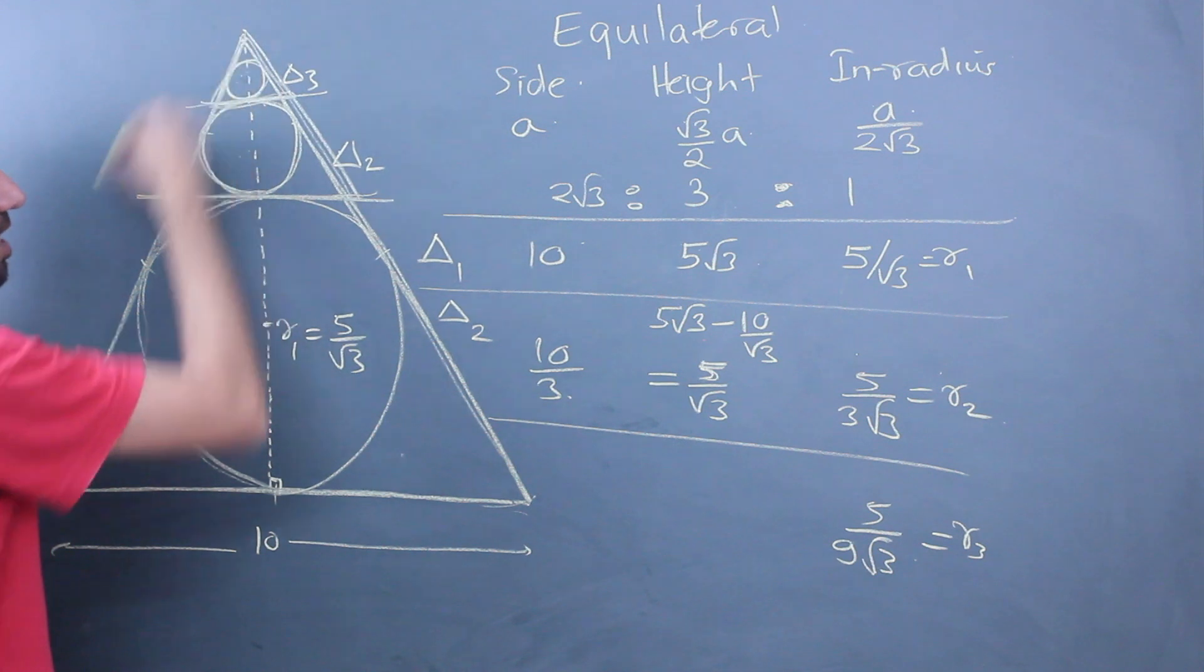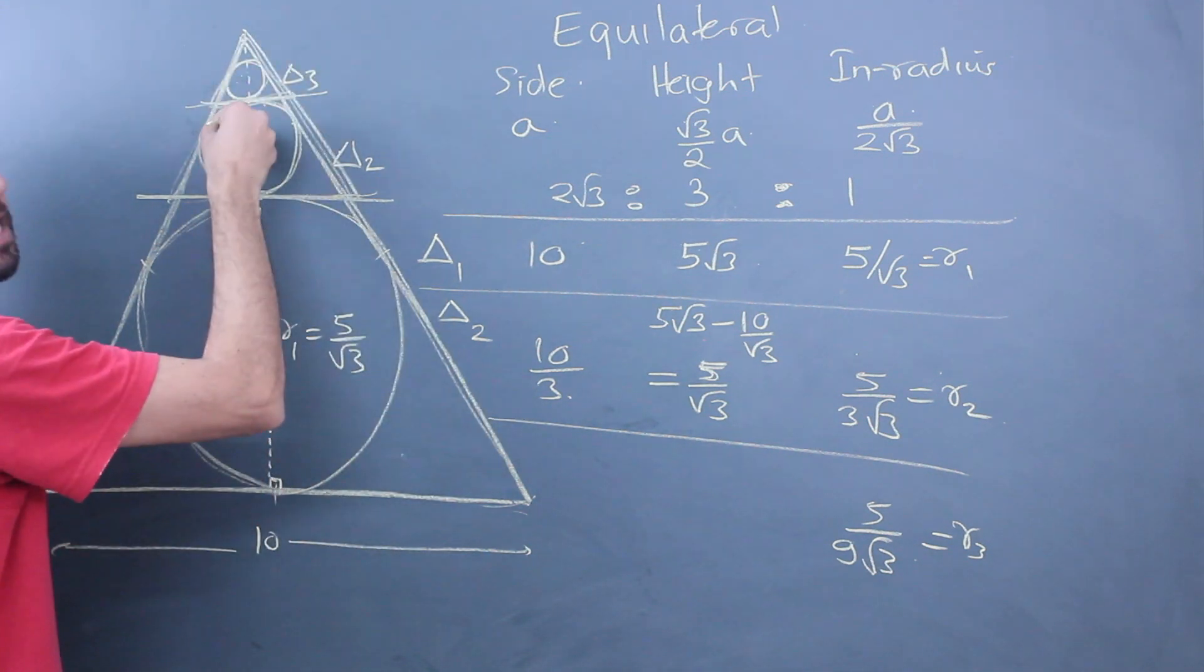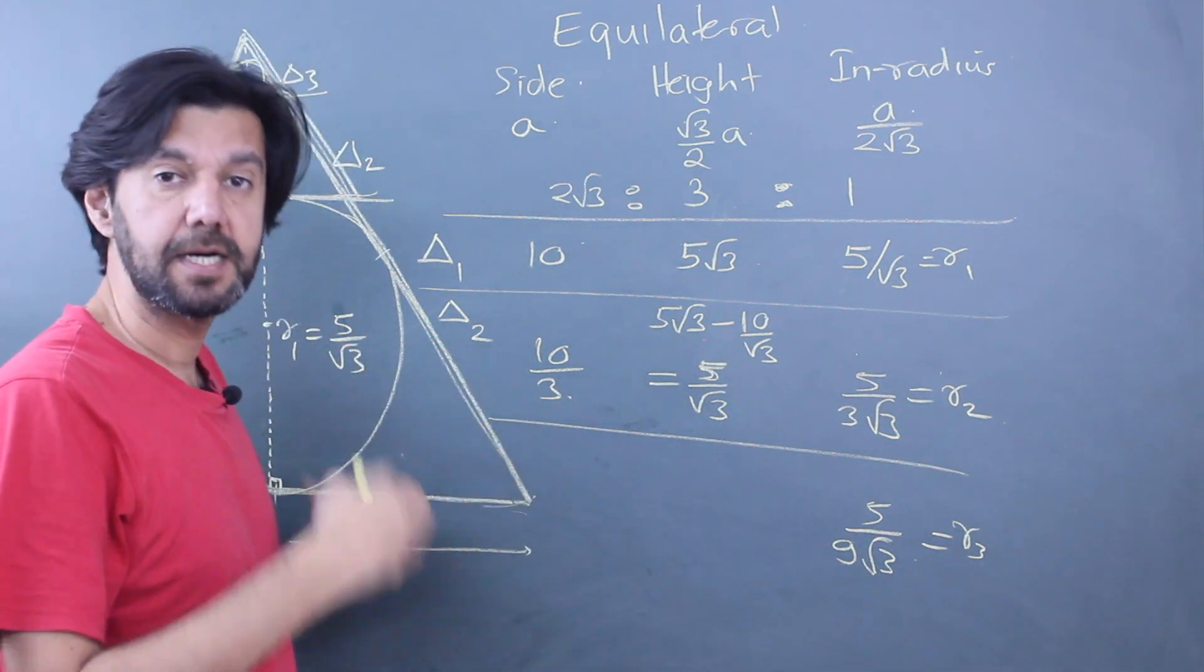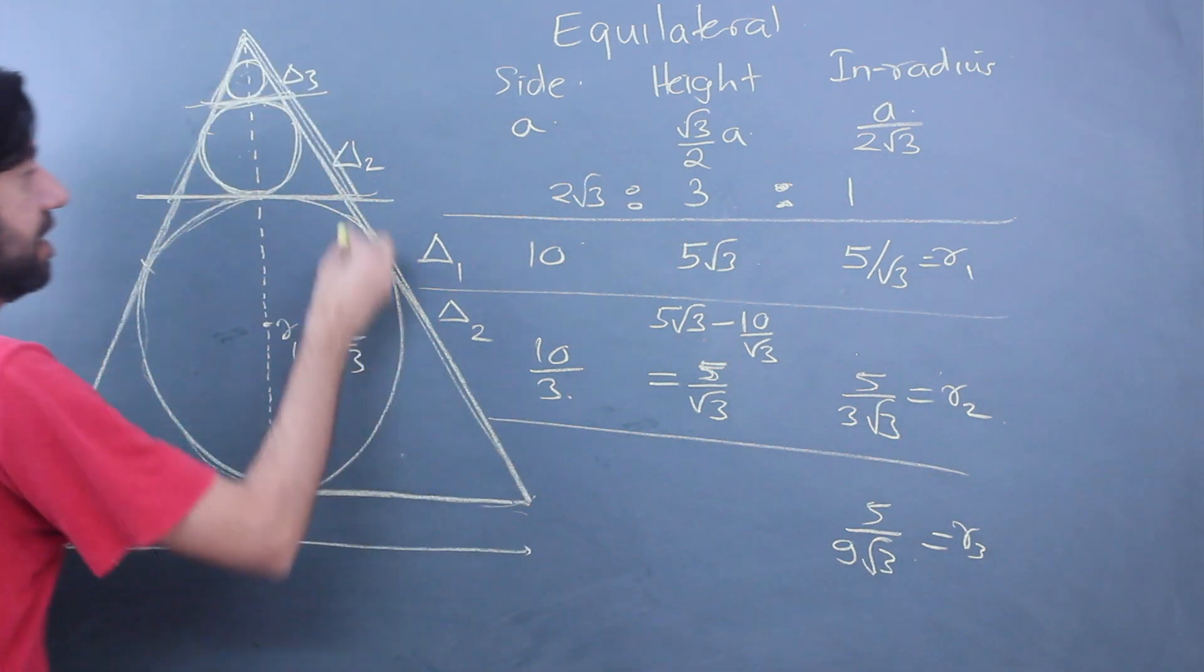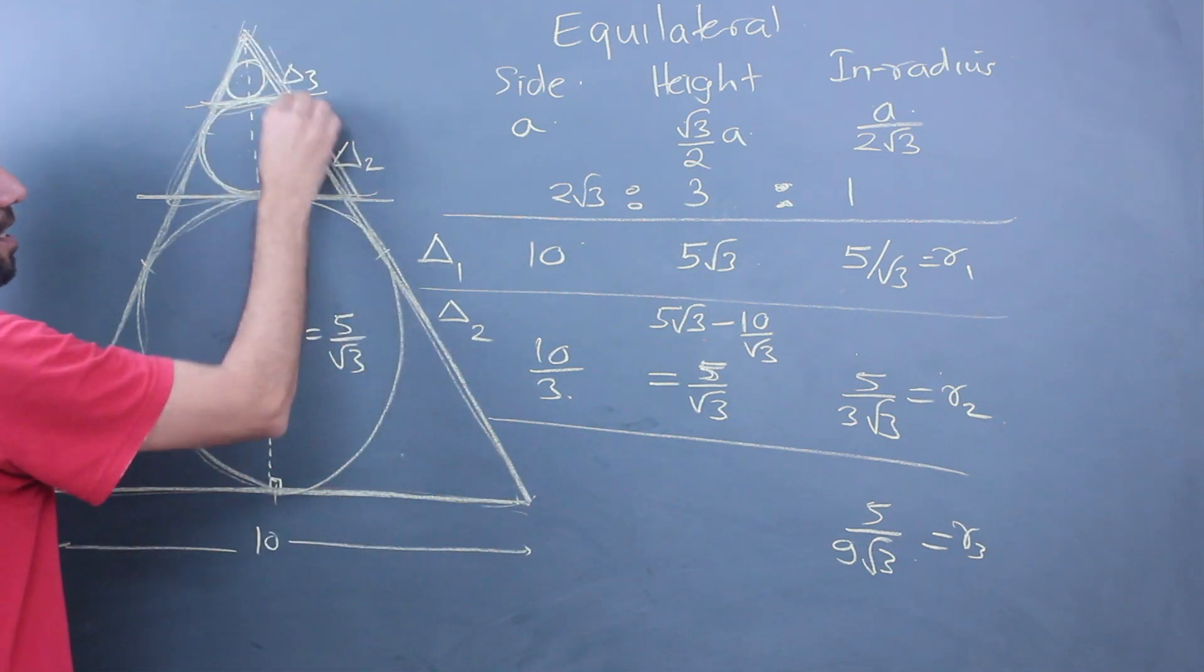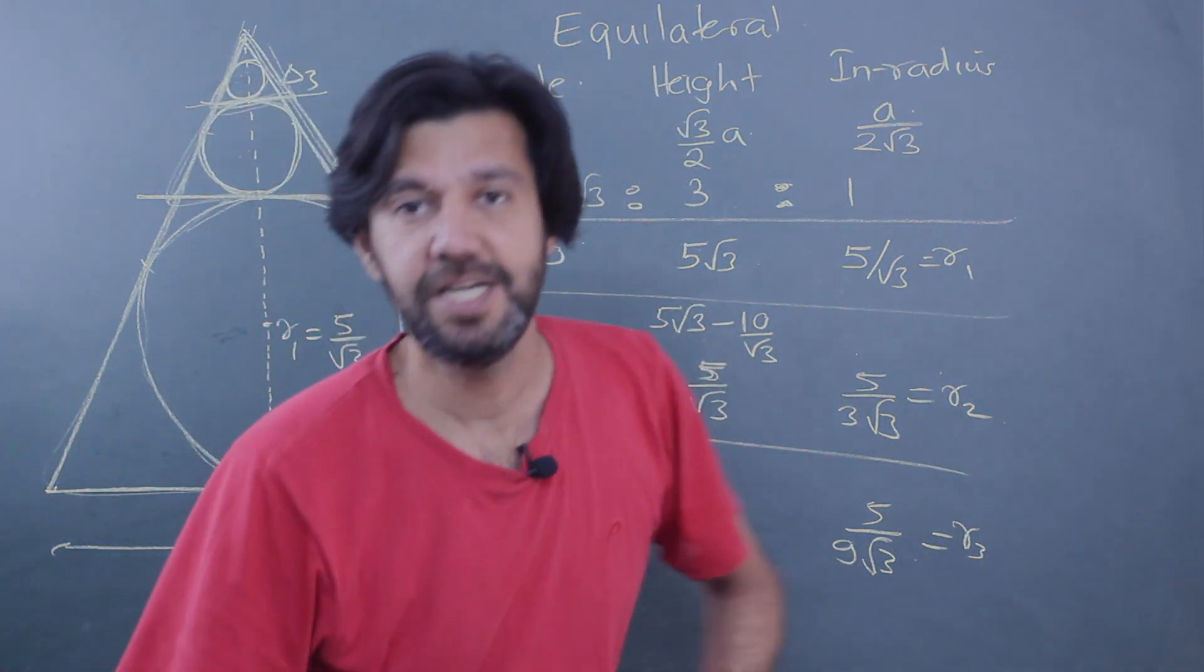So this tells me another takeaway: when I draw such triangles and circles, I know the successive triangles are becoming one-third of the previous. Considering this as the first triangle, second triangle, third triangle. So a lot of takeaways from the question.